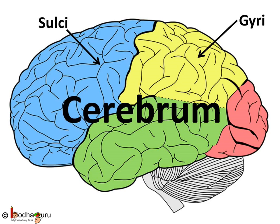Cerebrum, which is located in the forebrain, is the largest part of the brain. It is divided into two hemispheres by a deep groove. The outer surface of the cerebral hemispheres is called the cerebral cortex. The cortex is folded into ridges called gyri and grooves called sulci. These grooves and ridges increase the surface area to accommodate more nerve cells, and this is the part that makes us intelligent and logical.